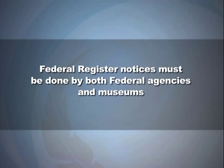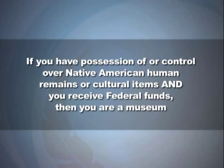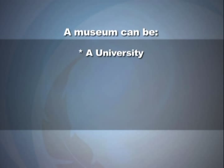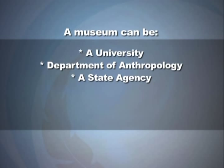There are two important distinctions between a Federal Register notice and a notice of intended disposition. First, Federal Register notices must be done by both federal agencies and museums. Under NAGPRA, if you have possession of or control over Native American human remains or cultural items and you receive federal funds, then you are a museum. This means a museum can be a university Department of Anthropology, a state agency, police department, city library, or coroner's office.